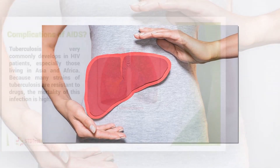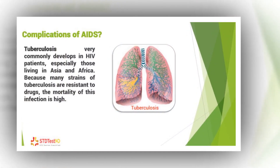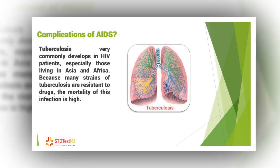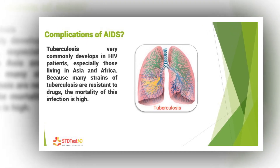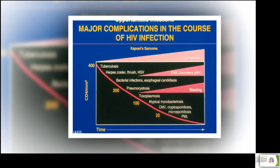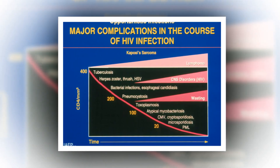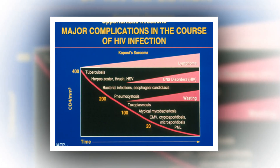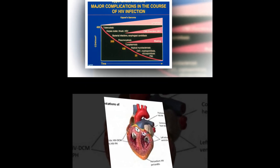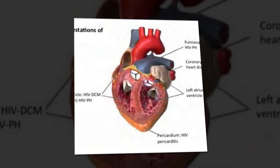Stay healthy — you can take simple steps to lower your chances of getting an opportunistic infection or cancer. First and foremost, take your HIV medication every day; it keeps the virus in check so it can't damage your immune system. Other ways to lower your odds include practicing safe sex: use condoms, internal condoms, and dental dams to ease the transmission of sexually transmitted diseases as well as HIV.